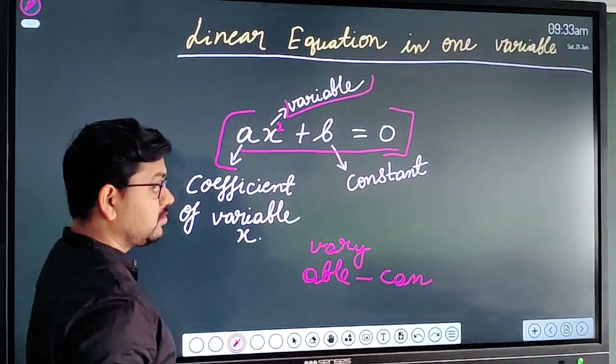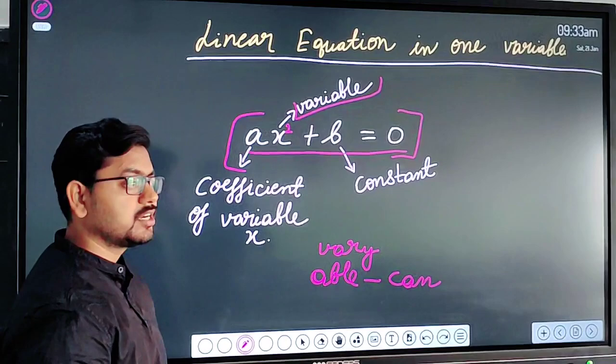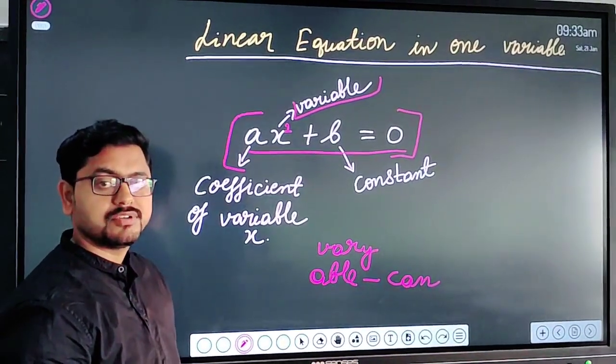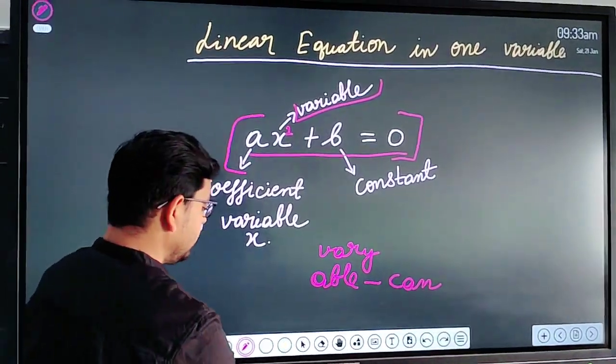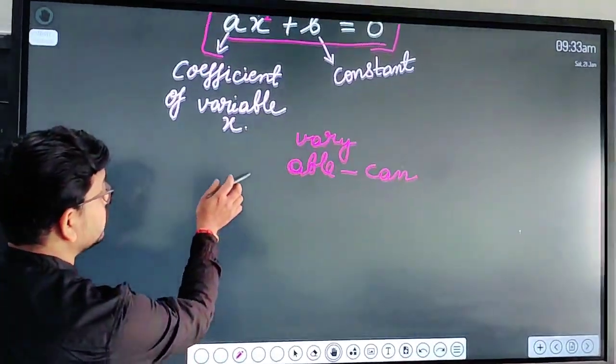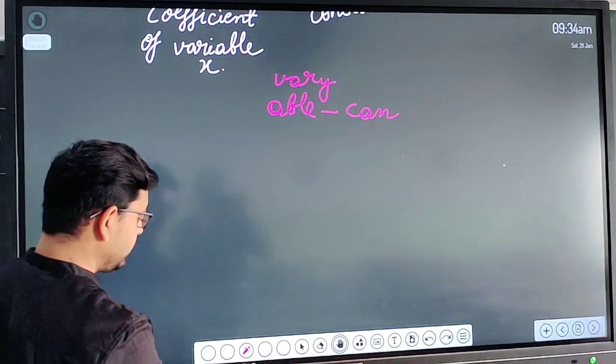So this is just a general or simple equation in which you can understand how linear equation in one variable looks like. So let me explain using one example here.